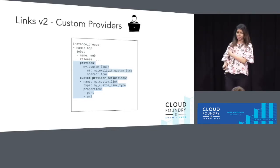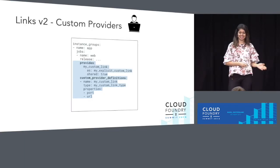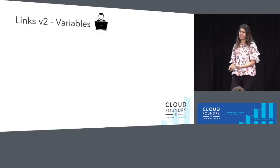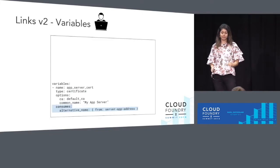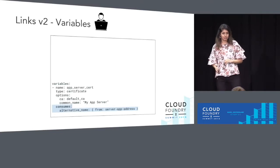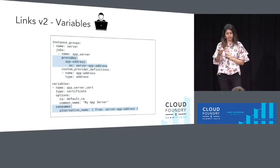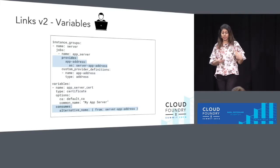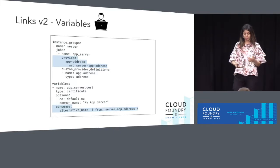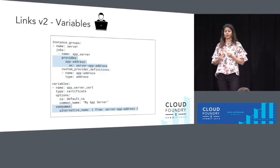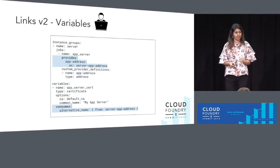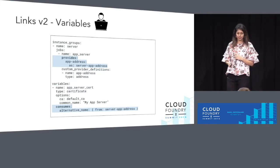The reason for this existence comes in handy when we talk about variables. In this example, the app address job provides a custom link of 'server app address' of type 'address'. This will be consumed in the alternative name down below in the variable. So when this variable is generated, the SANs of that certificate will actually contain the Bosch DNS address of that job. It's really cool — it solves a very important problem.